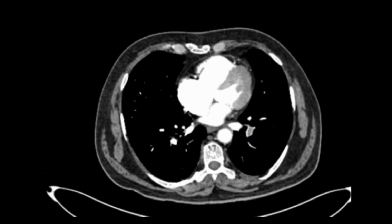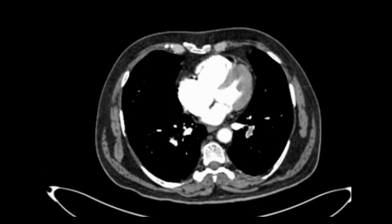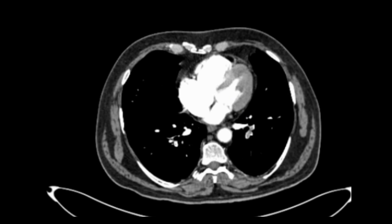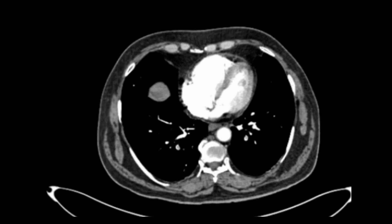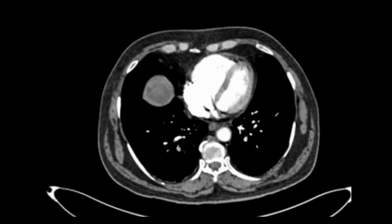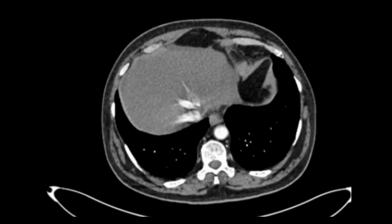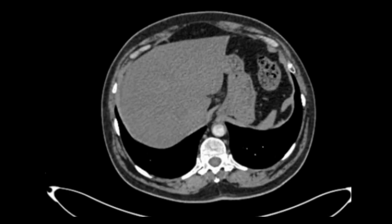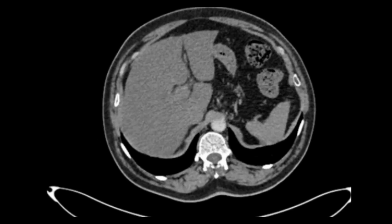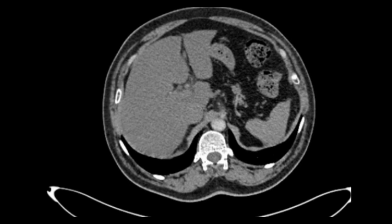As we go down, we can see the four chambers of the heart. The wall of the left ventricle appears hypertrophied. We then follow the pulmonary vessels to the base of the lung; the upper sections of the abdomen are clear.